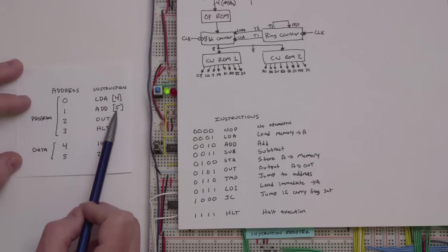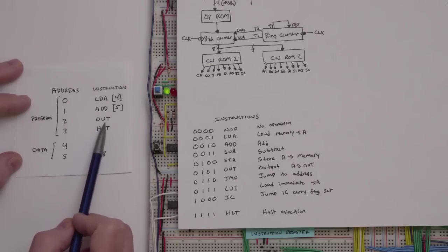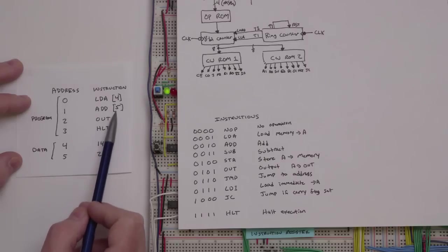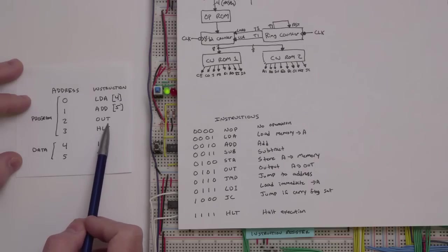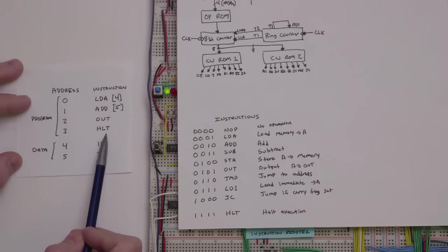Once we've done that, the next instruction is the OUT instruction, which outputs the contents of the A register to the display. After we've added the two numbers, we want to put that output on the display so we can see the result. The last instruction halts the computer, stopping execution.